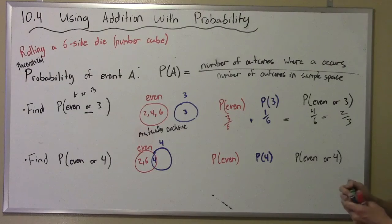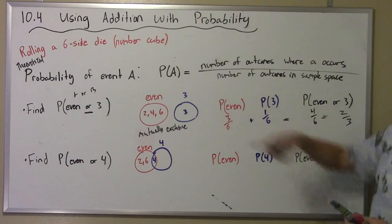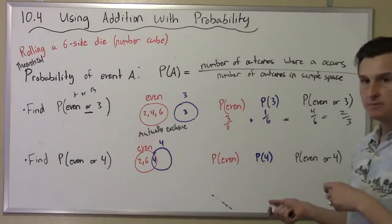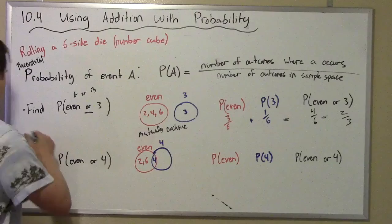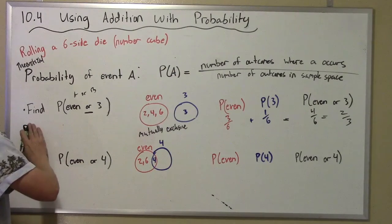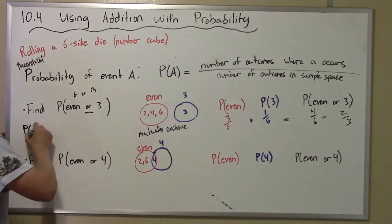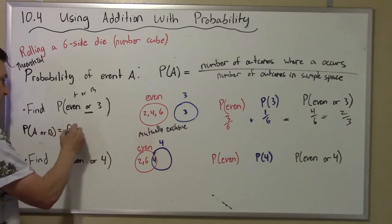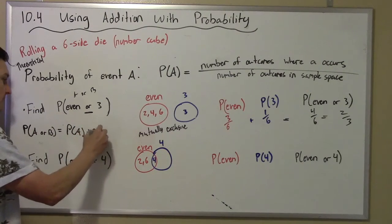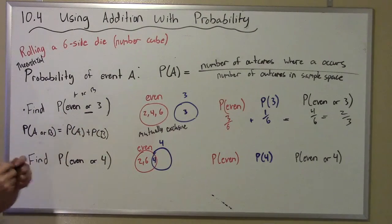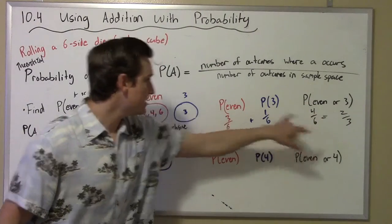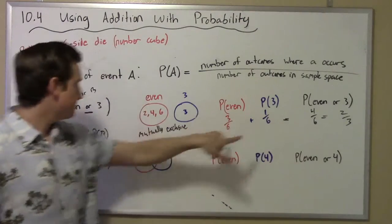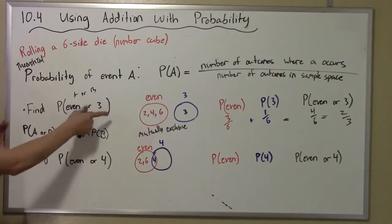When we have mutually exclusive events, the probability of A or B is just the probability of A plus the probability of B. So the probability of event A or event B happening equals P(A) plus P(B). The probability of one or the other is simply each added together. This is how we find the probability of an 'or' with mutually exclusive events.